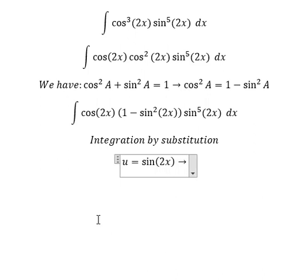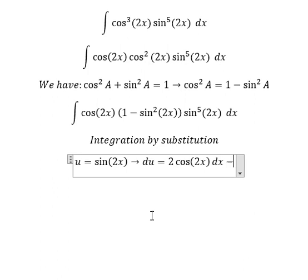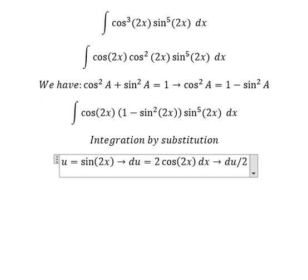We need to take the first derivative for both sides and we have du equals 2 cosine 2x dx. Because we don't have the 2 here, we need to divide both sides by 2, so du over 2 equals cosine 2x dx.